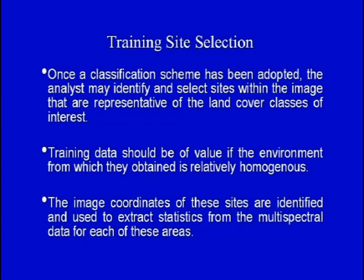Depending upon the type of information required by the analyst, the level of information classes can be selected and the information from satellite data acquired. Having decided the land use/land cover classification scheme, the next task is training site selection. Once a classification scheme has been adopted, the analyst identifies and selects sites within the image that are representative of the land cover classes of interest. Training data should be of value if the environment from which they are obtained is relatively homogenous.